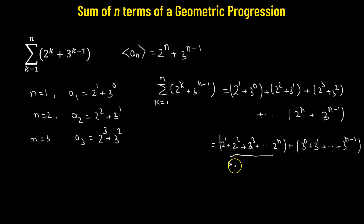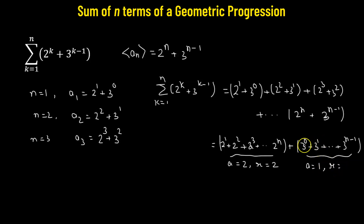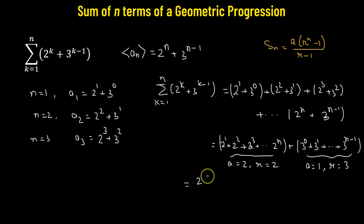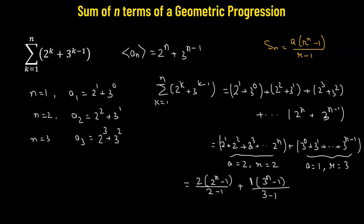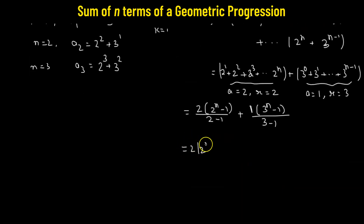The first part is a geometric progression with first term 2 and common ratio 2 squared over 2, which is 2. The second is also a geometric progression with first term 1 (since 3 to the power of 0 is 1) and common ratio 3. Applying the formula Sn = a times (r to the power of n minus 1) divided by (r minus 1), the sum equals 2 times (2 to the power of n minus 1) divided by (2 minus 1), plus 1 times (3 to the power of n minus 1) divided by (3 minus 1). This simplifies to 2 times (2 to the power of n minus 1) plus (3 to the power of n minus 1) divided by 2, which is the sum of the sequence up to n terms.